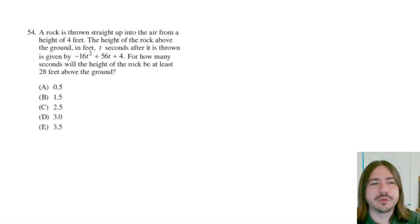Hey y'all, welcome back. Number 54 says a rock is thrown straight up into the air from a height of four feet. The height of the rock above the ground in feet t seconds after it is thrown is given by this function, negative 16t squared plus 56t plus four. For how many seconds will the height of the rock be at least 28 feet above the ground?